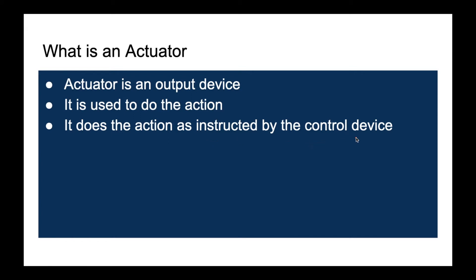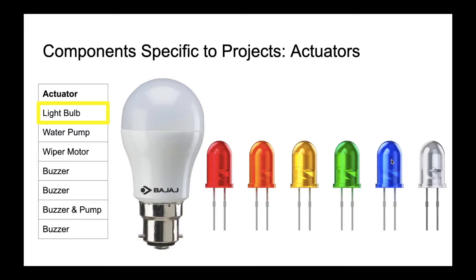What was this control device? There is an interfacing circuit between the sensor and the actuator. In the automatic street light, the sensor is nothing but the light sensor, and that circuit is nothing but the control device. Coming to the commonly available types of actuators, the light bulb itself is an actuator. Light bulbs are available in several categories — AC light bulbs, LEDs, and also bulbs in several sizes and shapes. All these come under the actuator category.